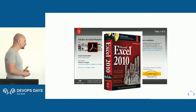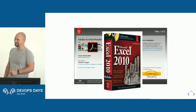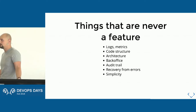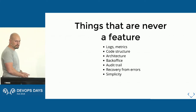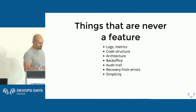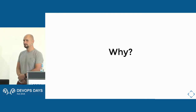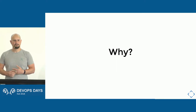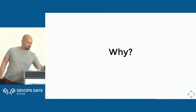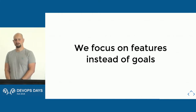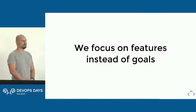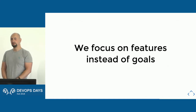So we have a list of things that should be features but never are: logs, metrics, code structure, architecture, back office for customer support agents, audit trails, recovery from errors, and simplicity. There's never a story for any of that. Why? One reason: we focus on features instead of goals. We forget the 'why.' People have a job they want done, and if we focus on the job to be done, we understand that a lot of other things don't actually matter.